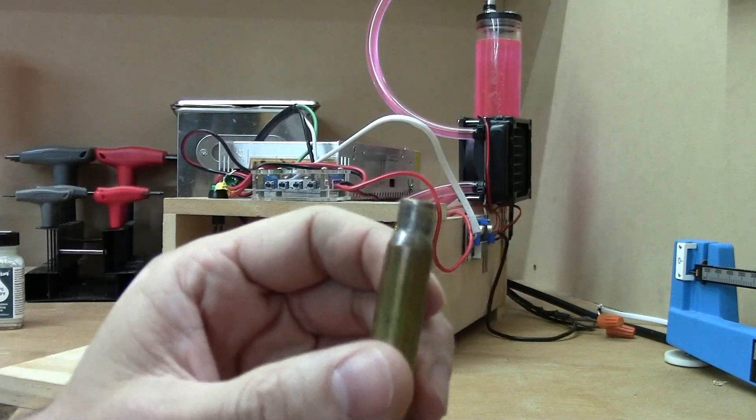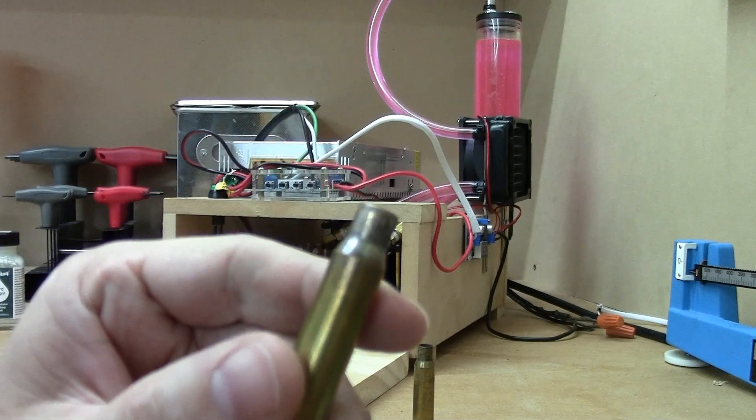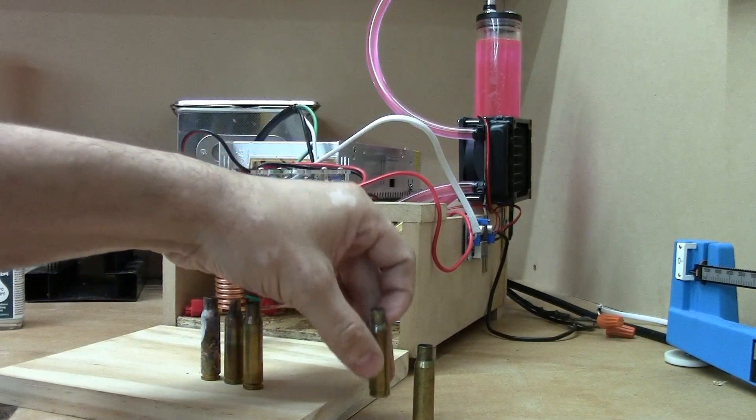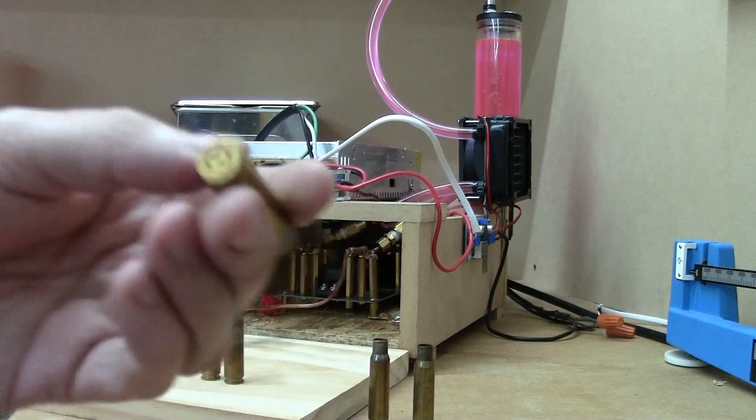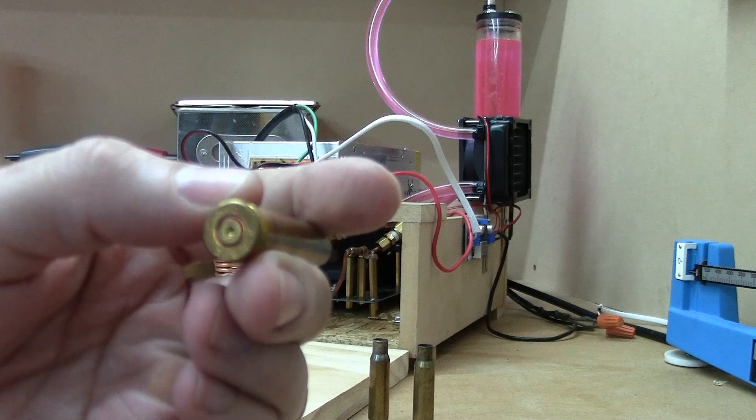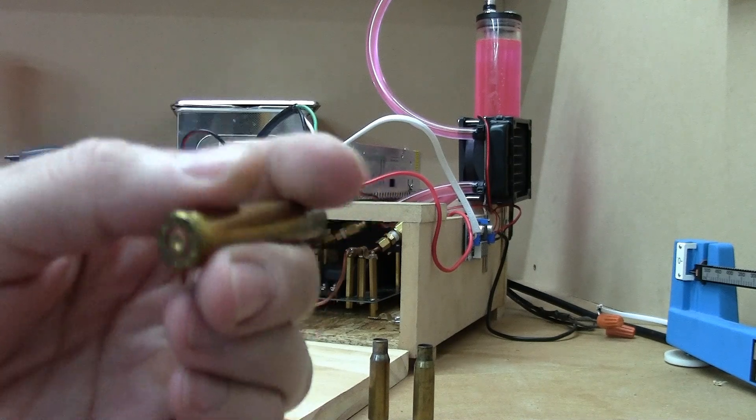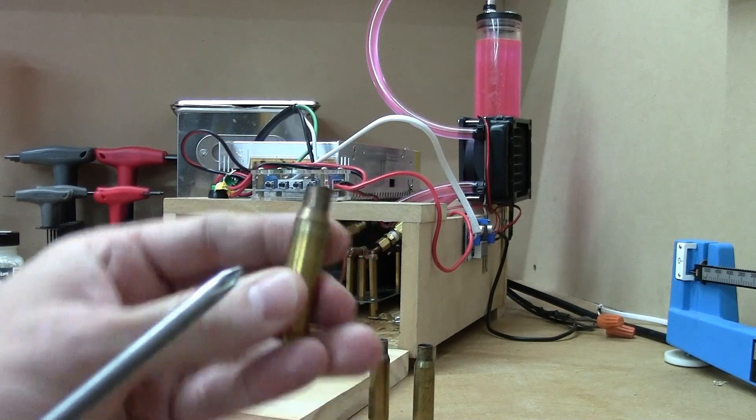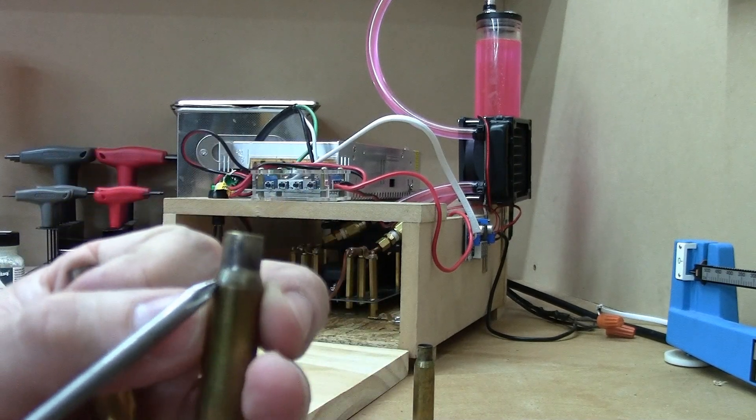These are all PMC cases by the way. This one, you can see it's a little annealed up here on the shoulder and the neck. This is a factory PMC case, it still has the primer, original primer in it with the sealant. You can see how far down the case that annealing goes - it actually goes less than mine.